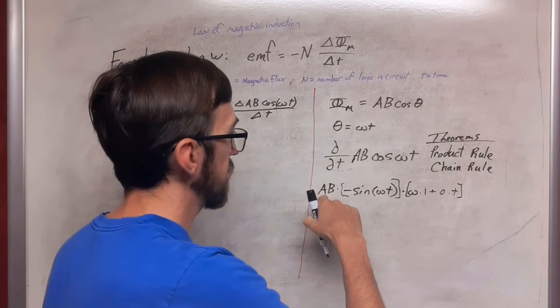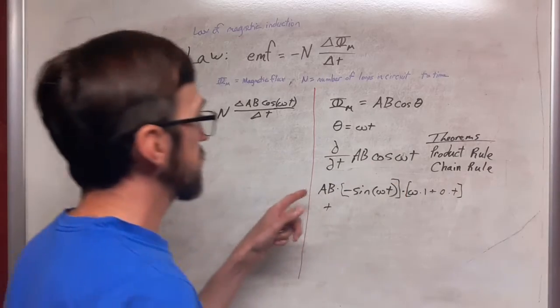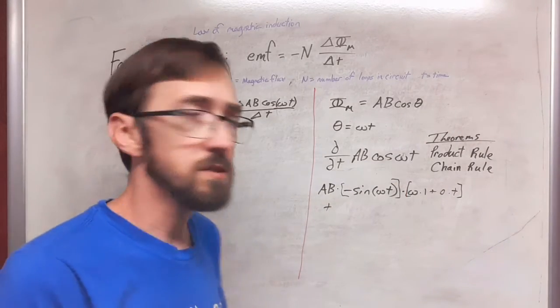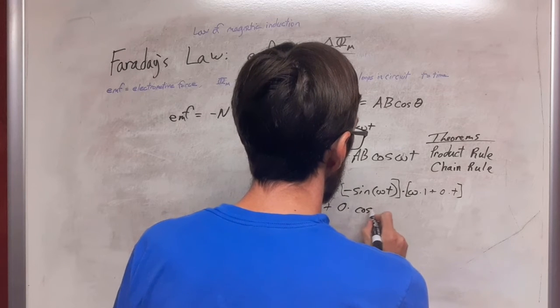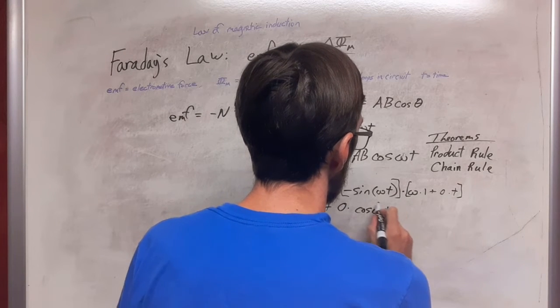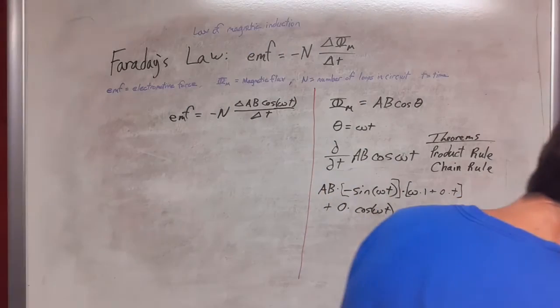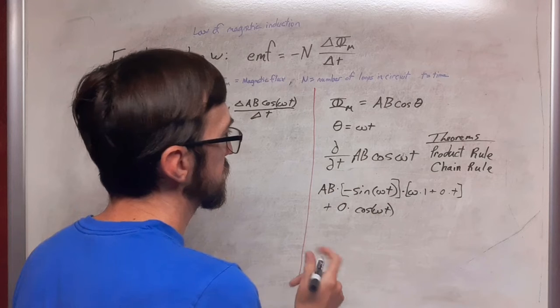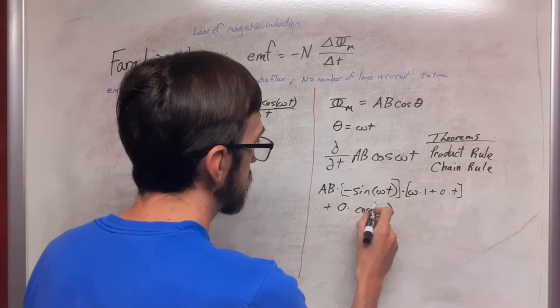Now that all has to be added to the derivative of AB times the original function. Since AB is a constant, the derivative of a constant is 0. So we have 0 times cosine omega t and so that's not really going to add any magnitude to this. So we see that this goes to 0.